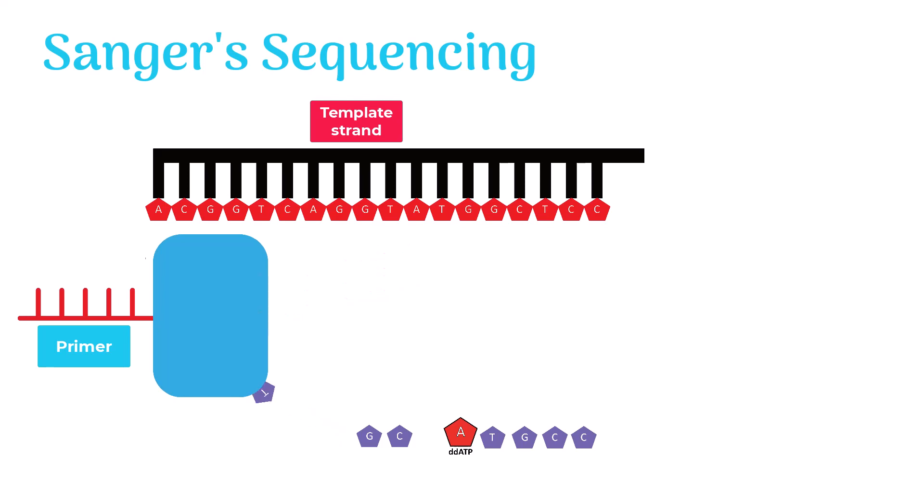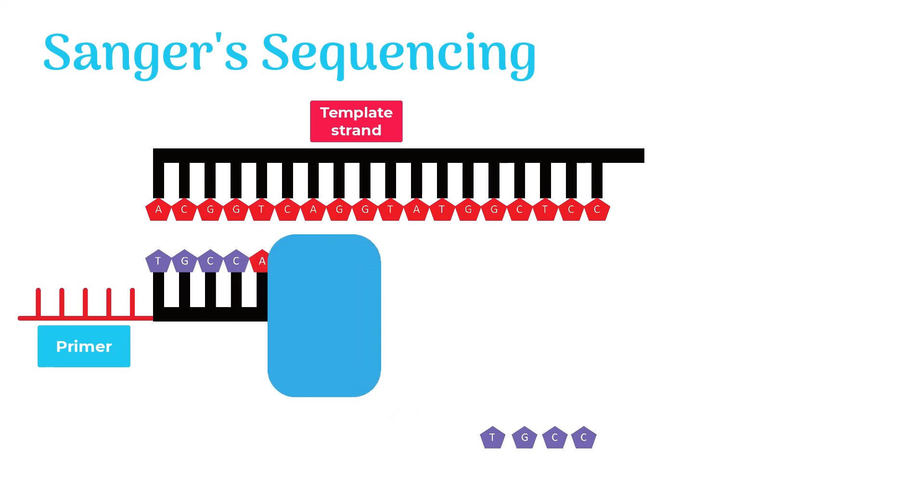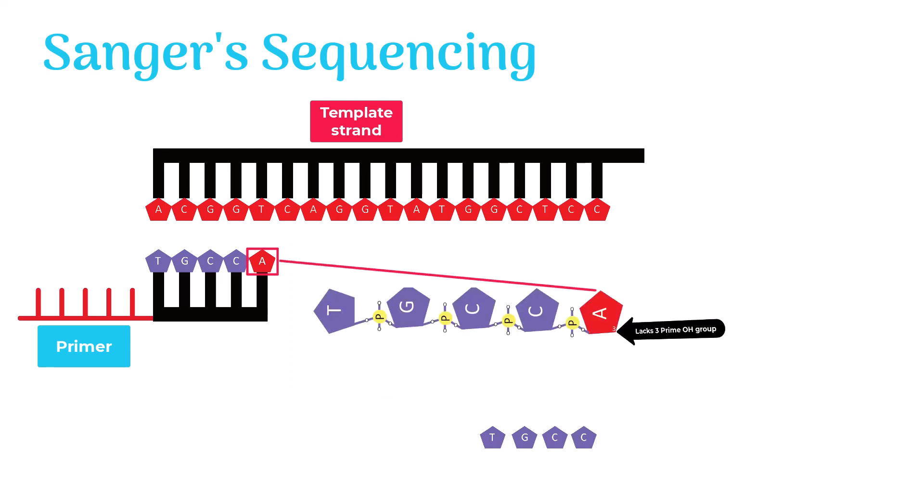Starting from the primer, it keeps adding deoxynucleotides to elongate the growing strand. But when it randomly adds the dideoxy ATP, the strand synthesis terminates. This is because no further nucleotide could be added to the dideoxy ATP because of the absence of its three prime OH group.